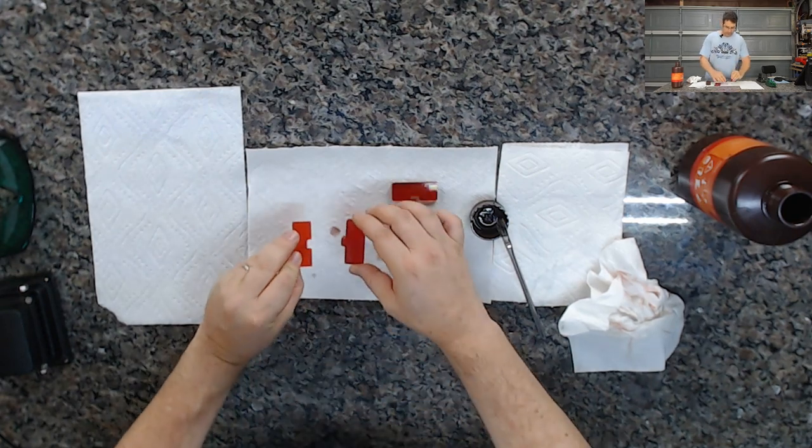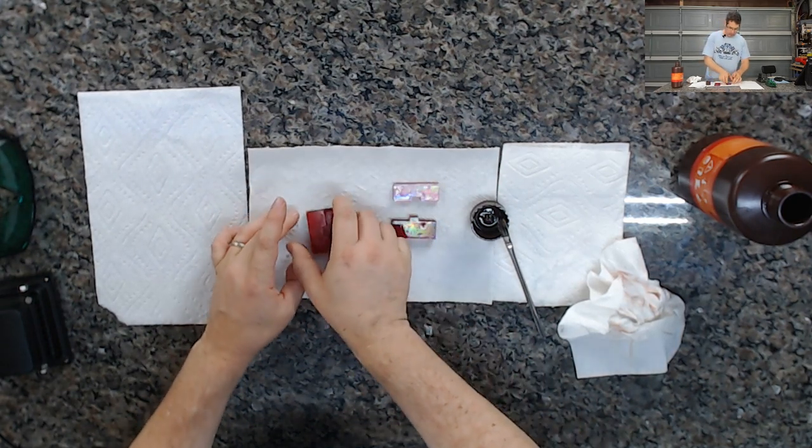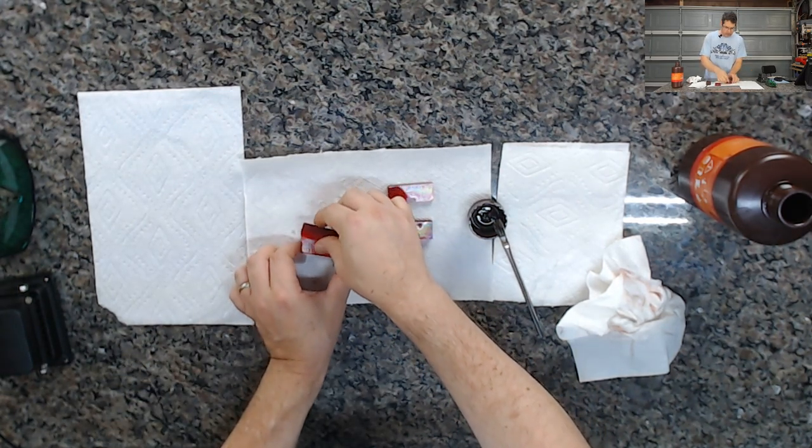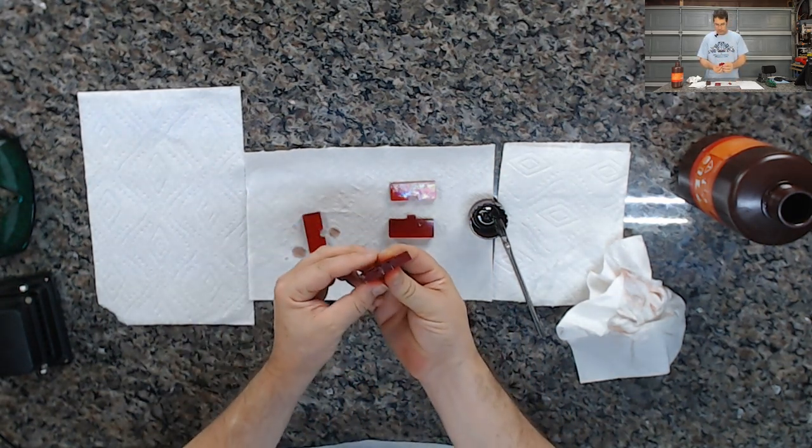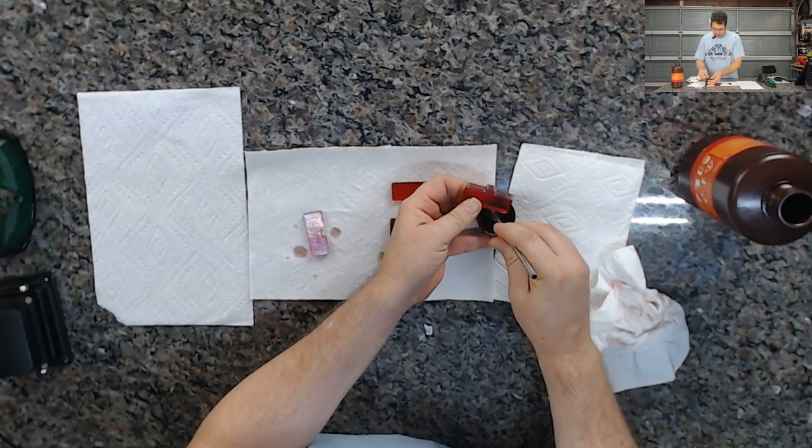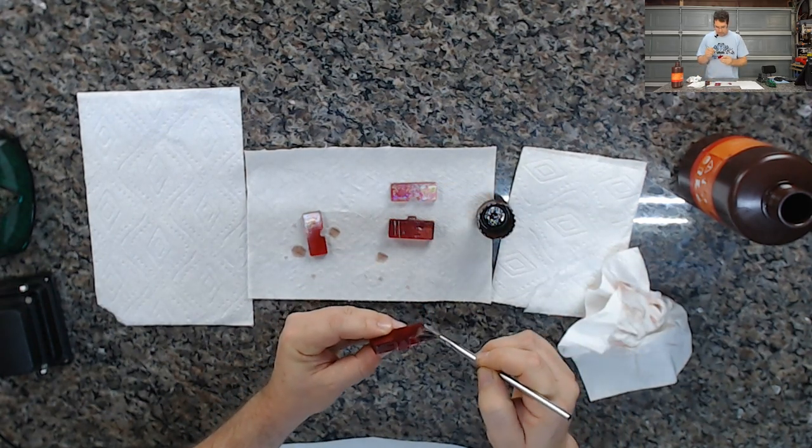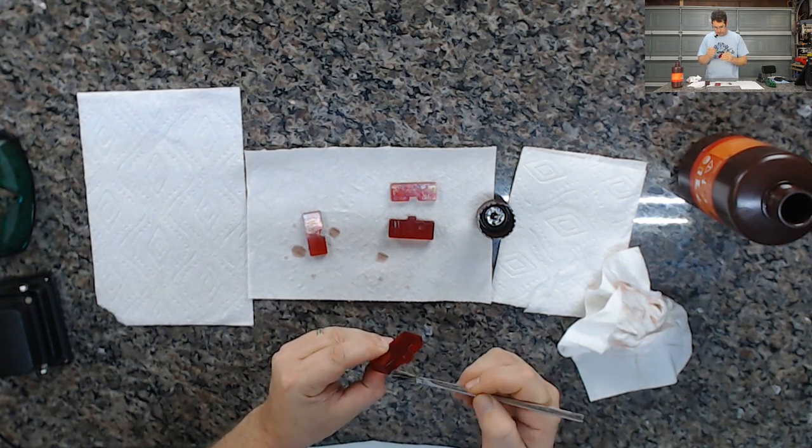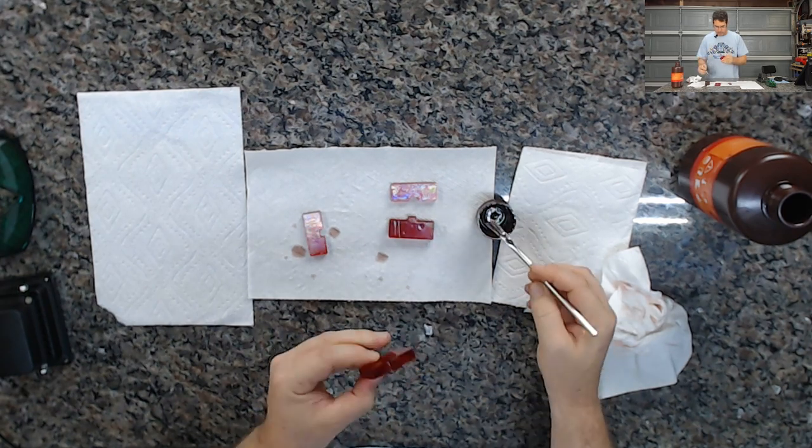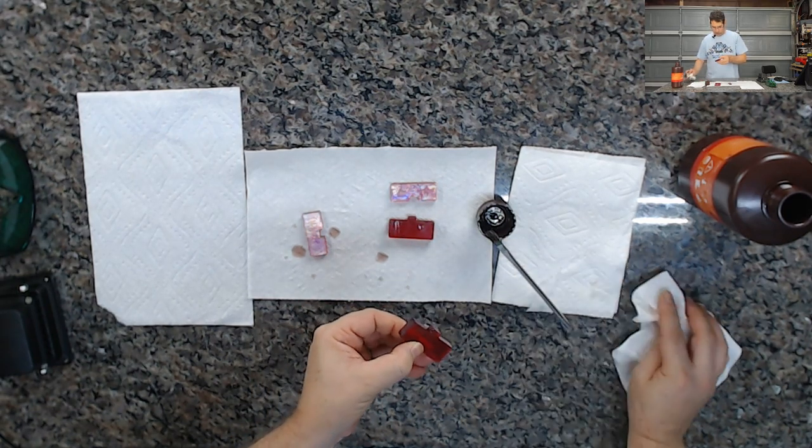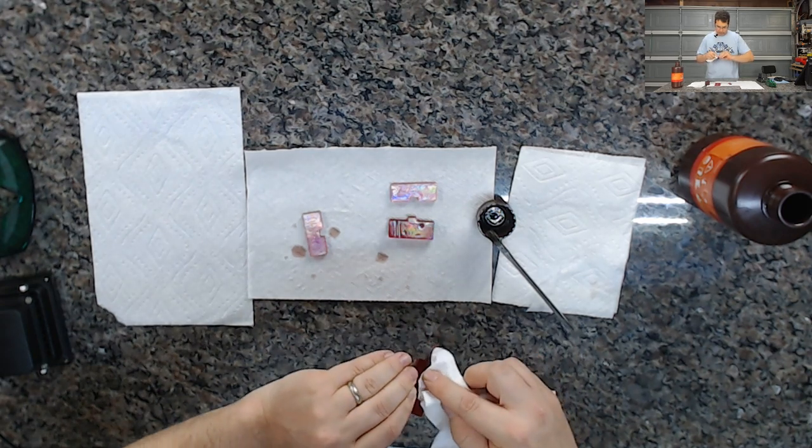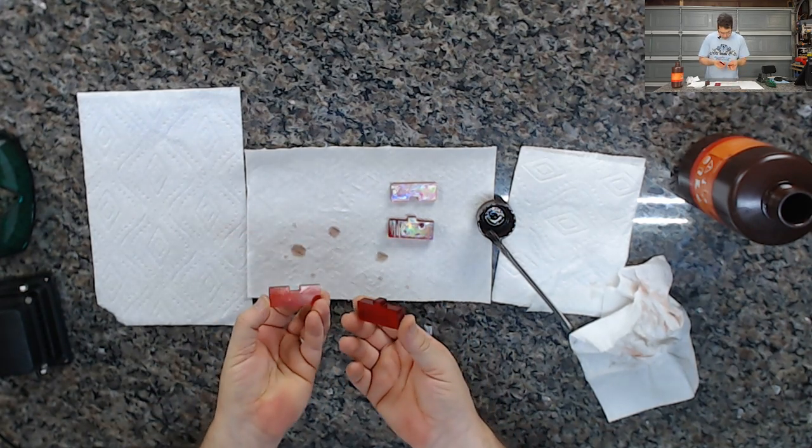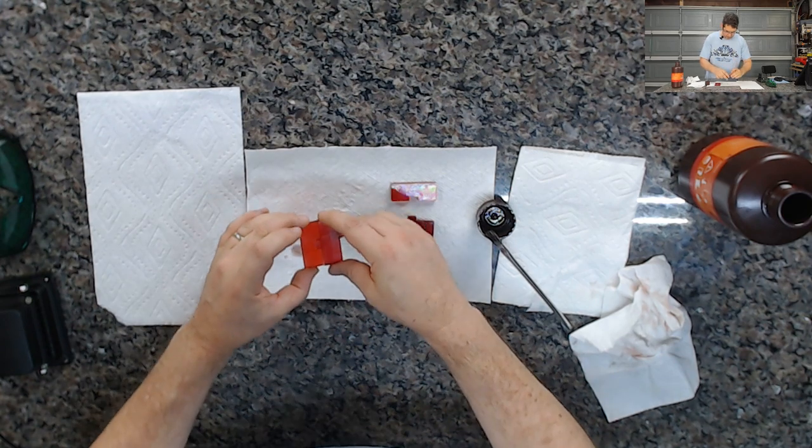And all we're going to do is fit these pieces together like so. I'm going to pull it apart, make sure that resin got on both sides and in this case it didn't, so I'm going to add some resin to the other side. We want enough resin there to bond and provide a little bit of a gap fill. Again, if you get any on the surface you can wipe it off with a paper towel. And we're going to fit those together like so.